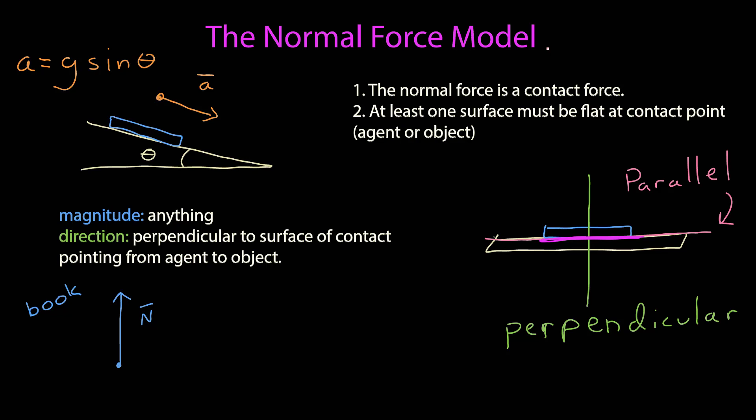If I wanted to identify the normal force that the board exerts on the book, my dot here represents my book, and that normal force would be along the green line perpendicular to the plane of the surface of contact, and it would point up because in this case the agent, the board, is below the book.